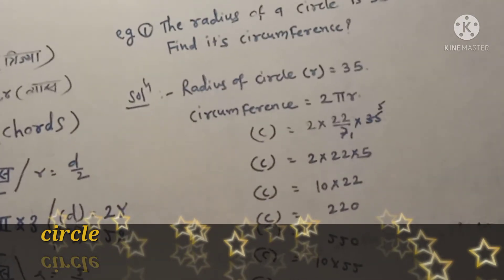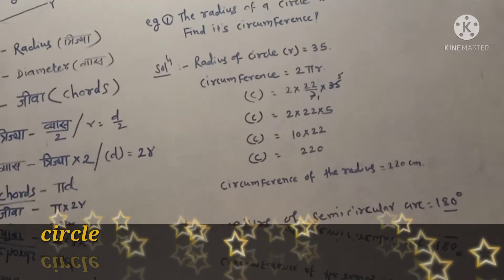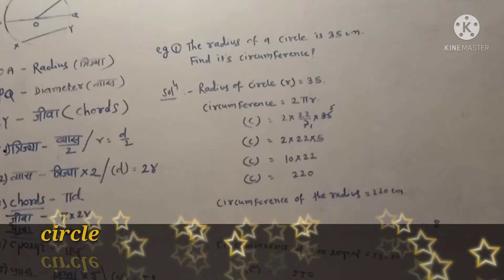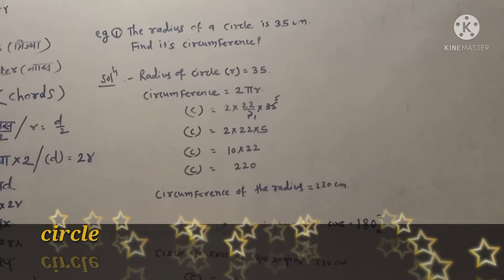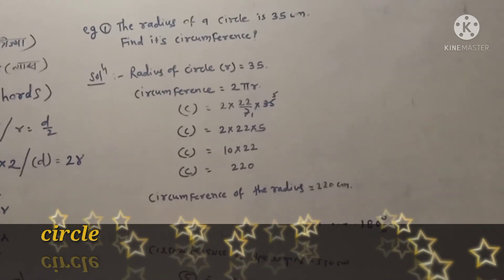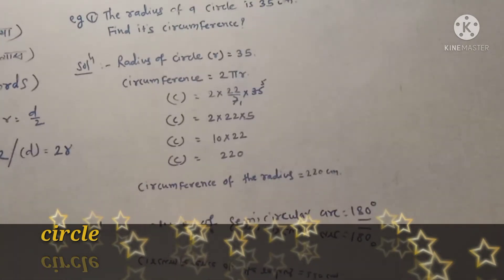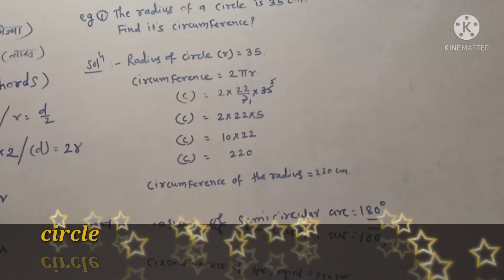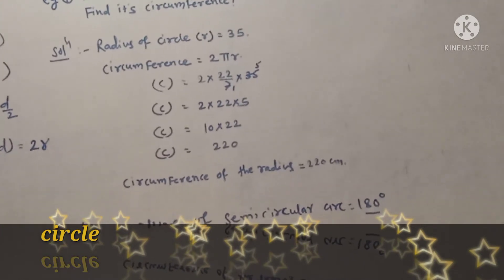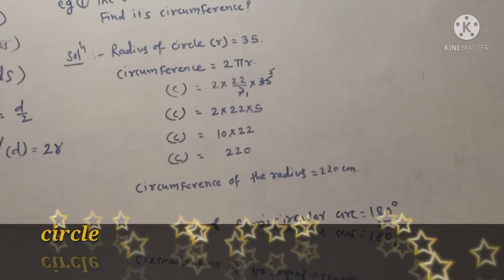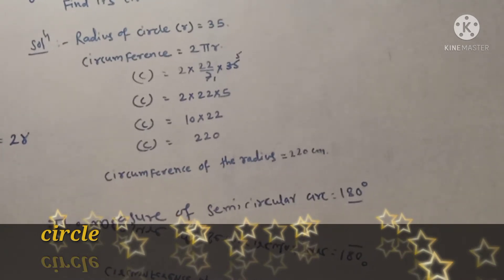Given: Radius of circle R is 25 cm. To find: Circumference C is equal to question mark. Using the formula, circumference is equal to 2 pi R. C is equal to 2 pi R.